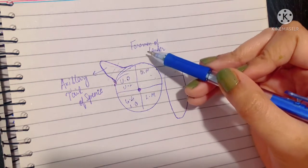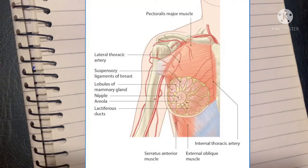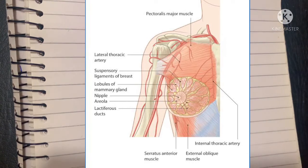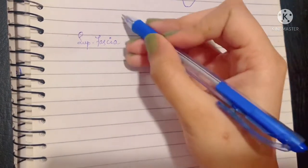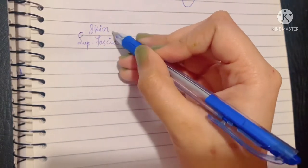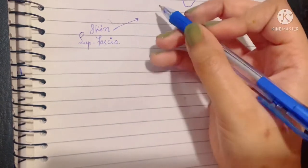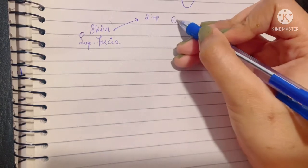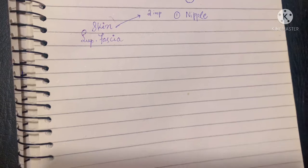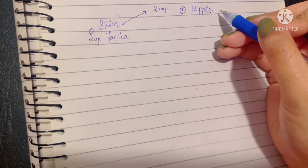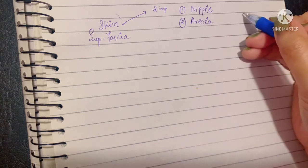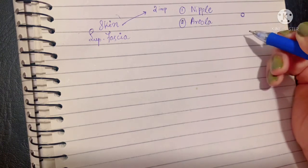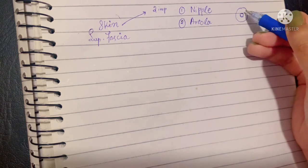Now let's talk about the structure of the breast. The breast is a very important part of the superficial fascia of the pectoral region. The skin of the breast includes two important features: number one is the nipple, a conical projection of the breast pierced by multiple lactiferous ducts; and number two is the areola, which lies right at the base of the nipple — a circular pigmented area.